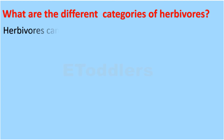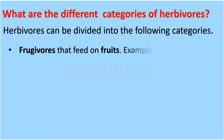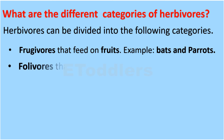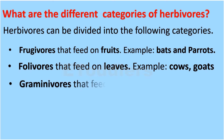Herbivores can be divided into the following categories. Frugivores, that feed on fruits — example, bats and parrots. Folivores, that feed on leaves — example, cows and goats. Graminivores, that feed on seeds — example, pigeons.